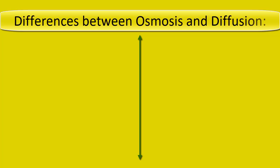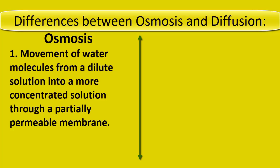Differences between osmosis and diffusion. Osmosis: movement of water molecules from a dilute solution into a more concentrated solution through a partially permeable membrane.